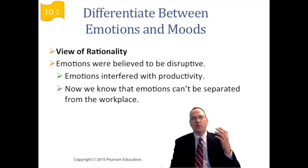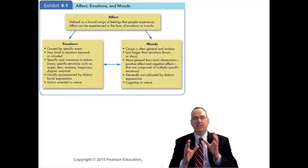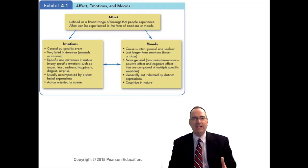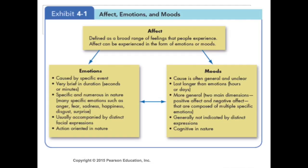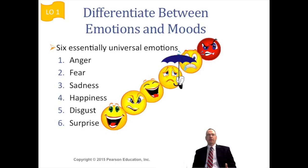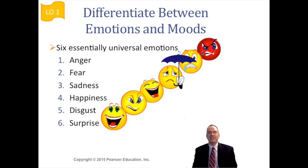Let's define our terms. If you see the word 'affect' in the text, affect is a broad range of feelings. Emotions are very strongly felt, while feelings and moods are more general. There are six universal emotions: anger, fear, sadness, happiness, disgust, and surprise. We want to be aware of each of these.